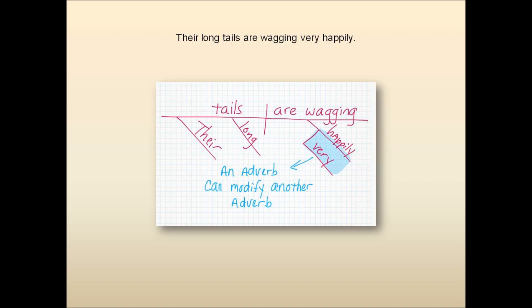Now we have something special happening with the adverbs. Happily describes how the dogs are wagging. Very describes to the extent that the dogs are happily wagging. So very is actually an adverb describing another adverb. So we have a horizontal construction and then another diagonal construction where the secondary adverb sits.